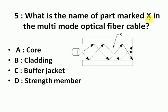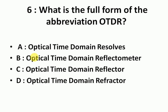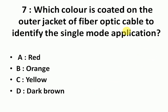What is the name of the part marked X in the multi-mode optical fiber cable? Optical time domain reflectometer. And which color is coated on the outer jacket of fiber optics cable to identify the single mode application? The answer is yellow.